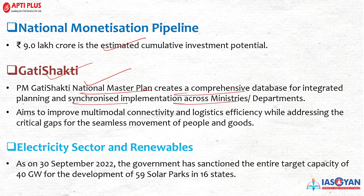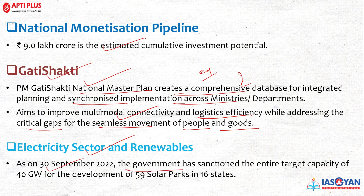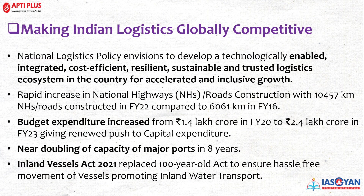The government sanctioned the entire capacity of 40 gigawatts for the development of 59 solar parks across 16 states as of September 30, 2022. The National Logistics Policy 2022 was envisaged to develop a technologically enabled, integrated, cost-effective, resilient, sustainable, and trusted logistics ecosystem for accelerated and inclusive growth, making India's logistics globally competitive.